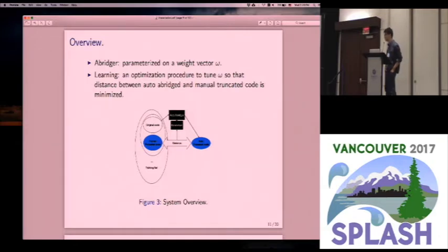So here is a system overview of our framework. Basically, we got a training set. Each sample in that training set includes a pair of code. One is the original source code, and the other one is the manual truncated code. Our basic procedure is that, so currently you can just view the auto-abridger as a black box, which is parameterized on a feature vector omega.